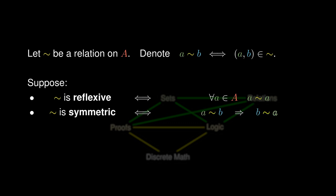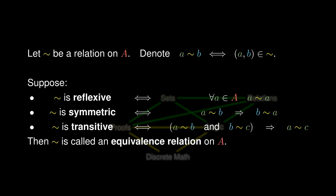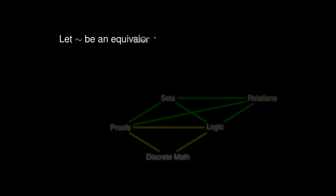Suppose tilde is symmetric as well, which means that whenever we have A tilde B, we also have B tilde A. And finally, suppose that tilde is transitive: if A tilde B and B tilde C, we obtain necessarily that A tilde C. If tilde satisfies all three criteria, we call tilde an equivalence relation, which generalizes equality.